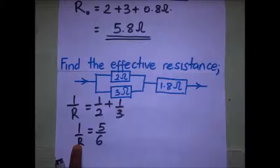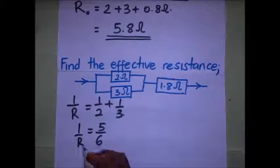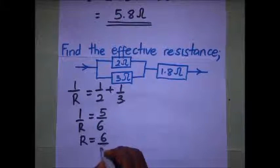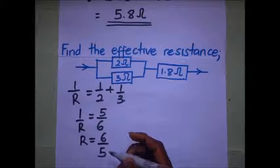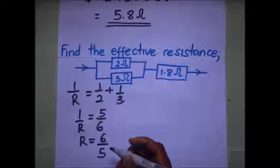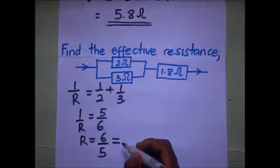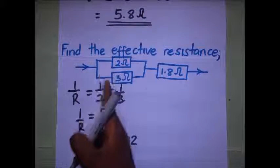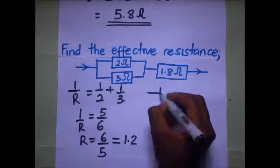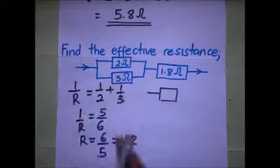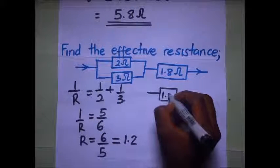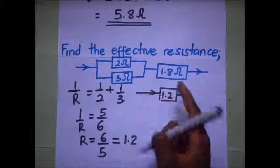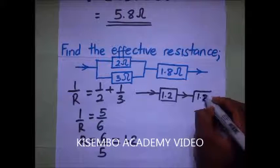When we make R the subject of the formula after cross multiplying, we get R as 6 over 5, which in decimal form is 1.2 ohms. Our new simplified diagram now shows the effective resistance of these two as 1.2 ohms, with the other resistor of 1.8 ohms remaining.